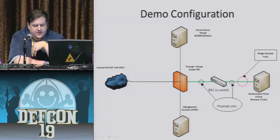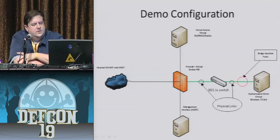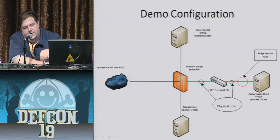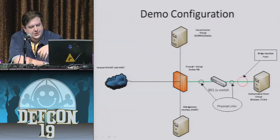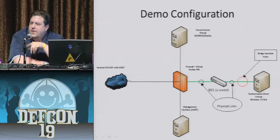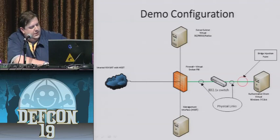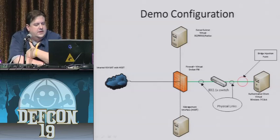My demo configuration is mostly virtual. I've got a server subnet that has a RADIUS box, a domain controller, and a WSS server. It's separated out by a firewall. The firewall has a connection to the switch, which also has a connection to a Windows 7 virtual client. Once everything is hooked up, the Windows 7 client will authenticate to the RADIUS server, the switch will let it go hot, and away we go.